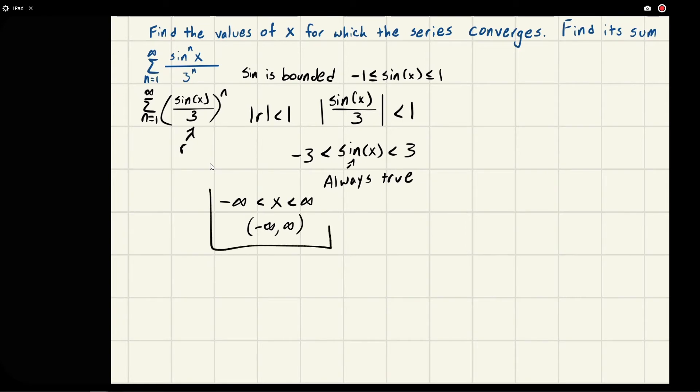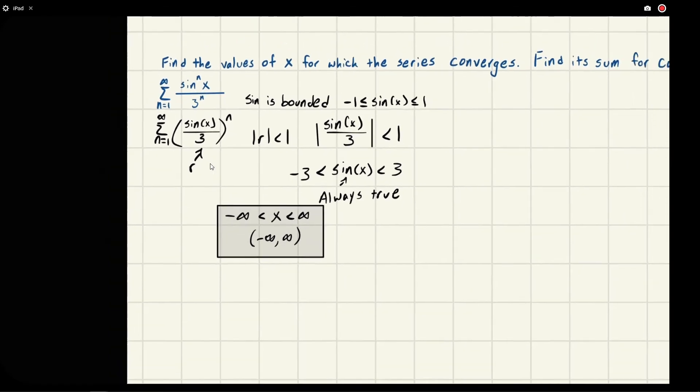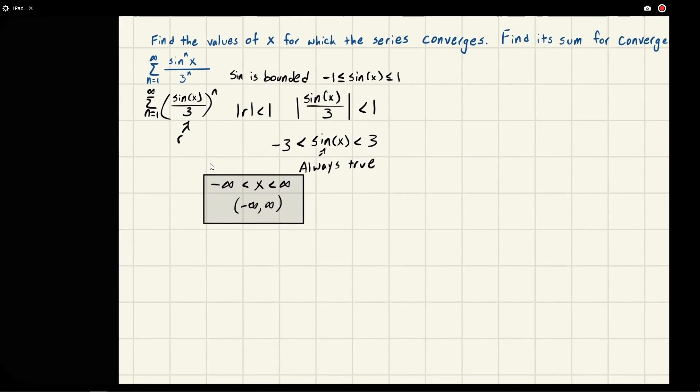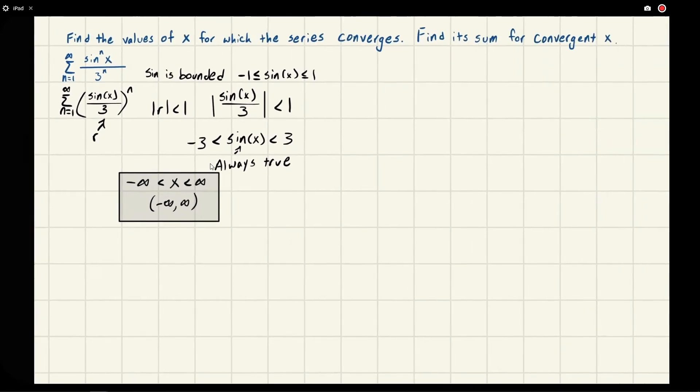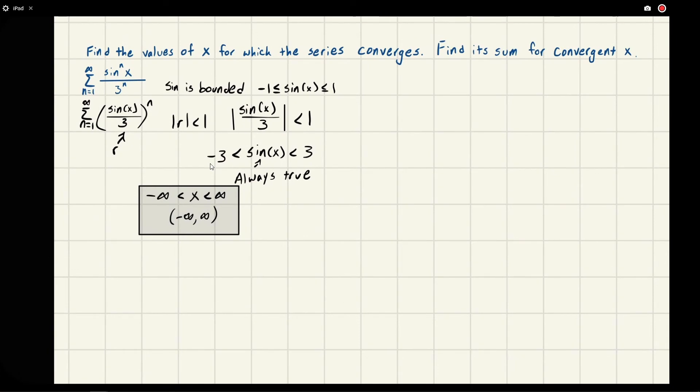Or you could also write it as negative infinity to infinity in interval notation. So there we go, that's the values of x for which the series converges. It turns out all x, the series will converge. Now it wants us to find the sum.